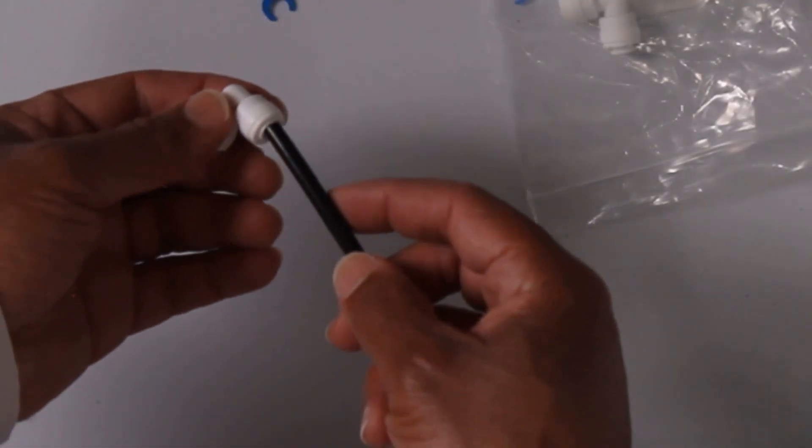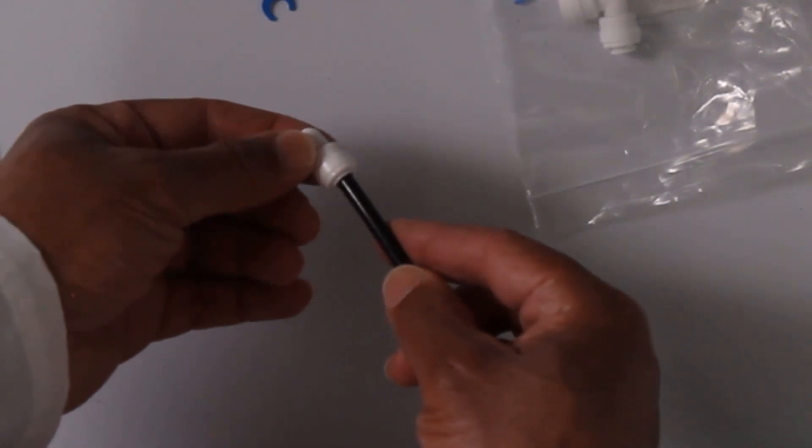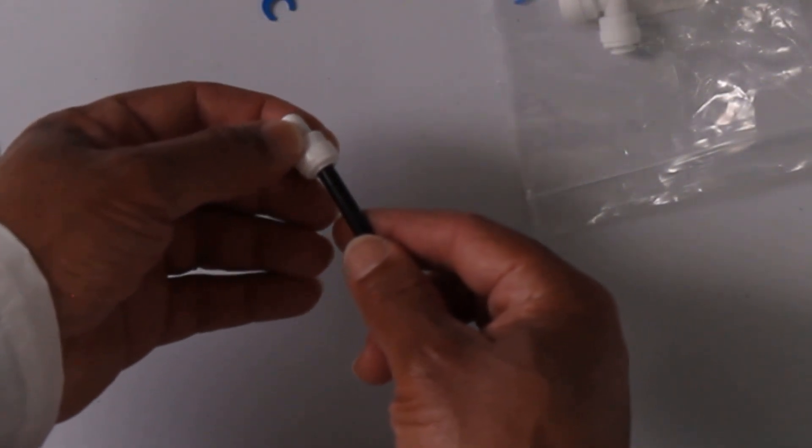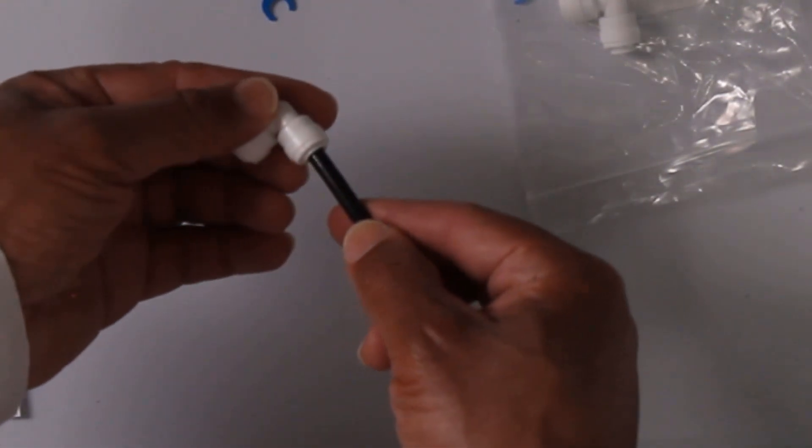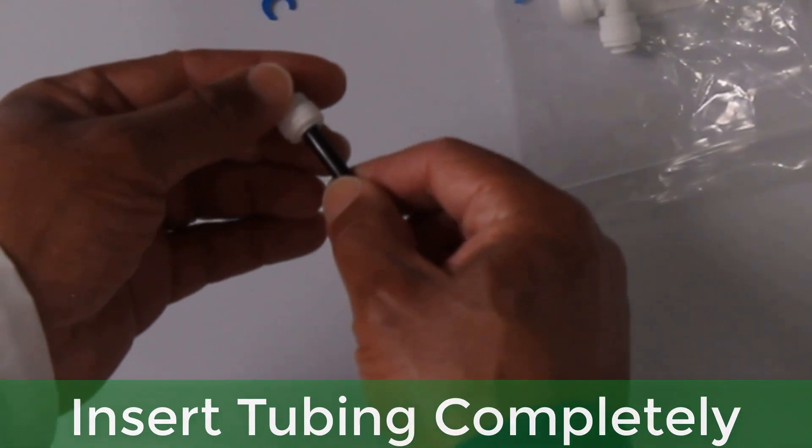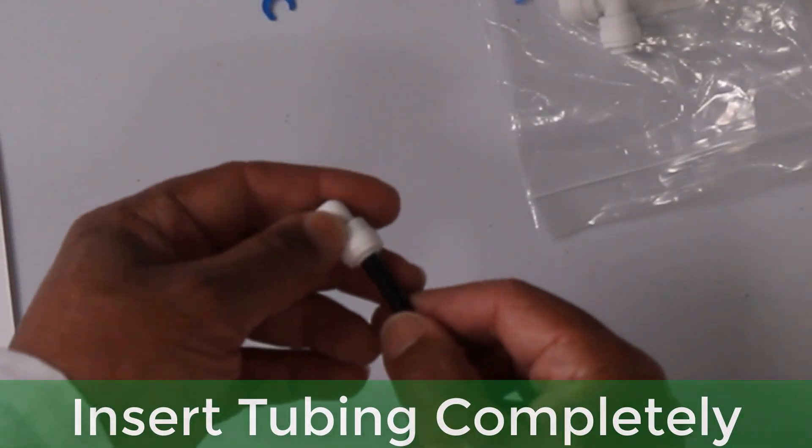Now, as you mentioned before, how do you use a Quick Connect? It's quite simple. So basically, you take your tubing and you insert it into your fitting and you want to make sure that the tube is inserted all the way in. It should go in about three quarters of an inch.